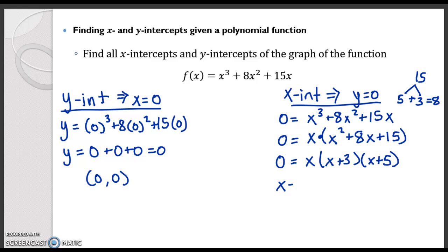So I set each of my factors equal to 0 because if any of them are 0, then we have a true statement. So after solving, we'll get x equals 0, negative 3, and negative 5.